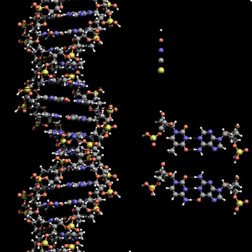The complementary nitrogenous bases are divided into two groups: pyrimidines and purines. In DNA, the pyrimidines are thymine and cytosine, and the purines are adenine and guanine.